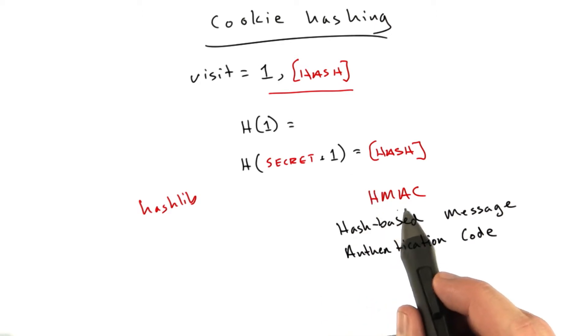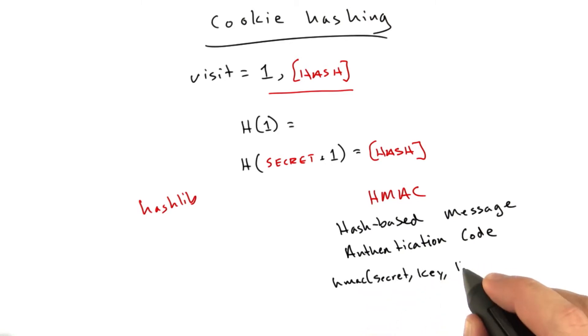An HMAC is basically just an algorithm that looks something like this: HMAC, a secret, a key, a hashing function, returns a hash. So, it'll look just like using Hashlib, except it'll take an extra parameter for secret, which it'll incorporate in a secure manner.